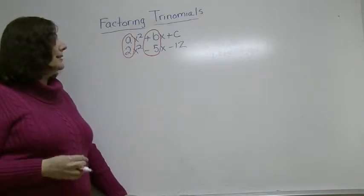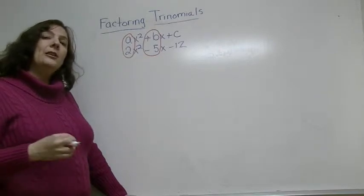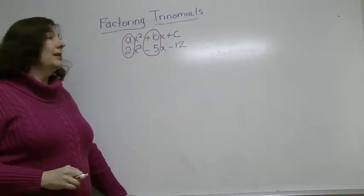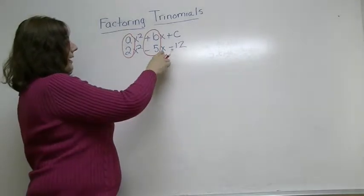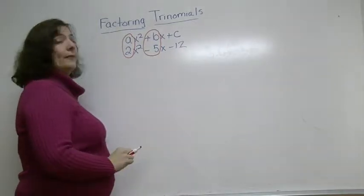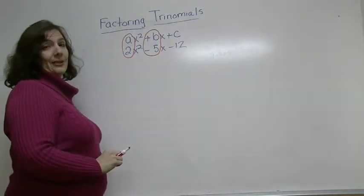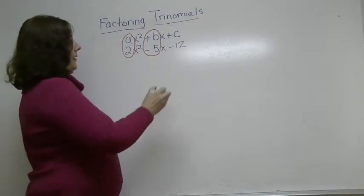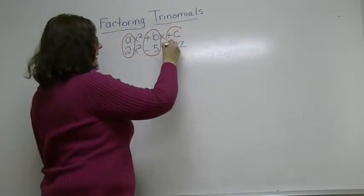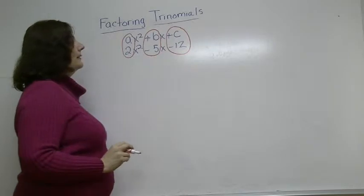Always remember to circle the sign that goes with the number. In algebra, positives and negatives, addition and subtraction, they're the same thing. So we always have to make sure whenever we're looking at a coefficient, a number in front of a variable, that we look at their sign as well as the number itself.